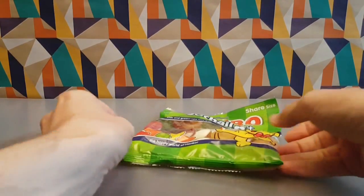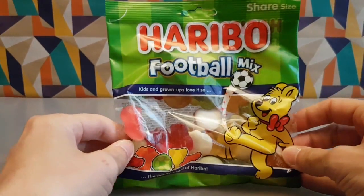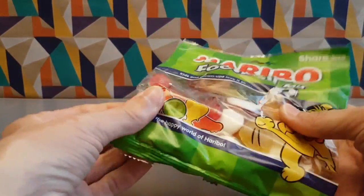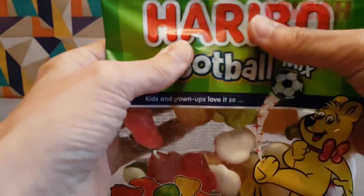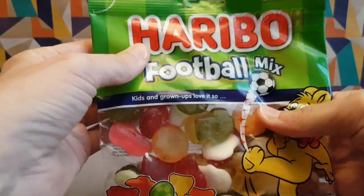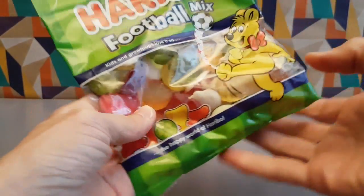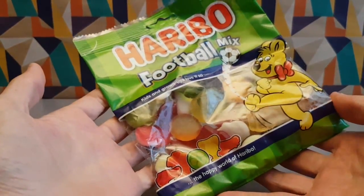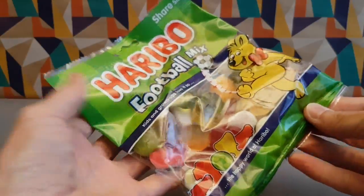Goal! Anyway, these are Haribo Football Mix. I'm sure these are around a lot of the time, but it's funny they've come up during a World Cup year. These are found in Poundland.